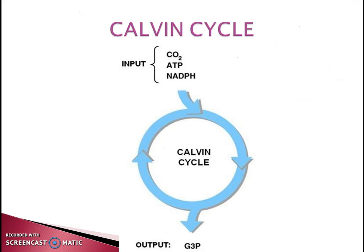Coming to the Calvin cycle: this cycle was discovered in the 1950s by three scientists — Melvin Calvin, James Bassam, and Andrew Benson. That is why the Calvin cycle is also known as the CBB cycle, that is the Calvin-Benson-Bassam cycle. It is also known as the C3 cycle because the first stable product of the Calvin cycle is a three-carbon compound.